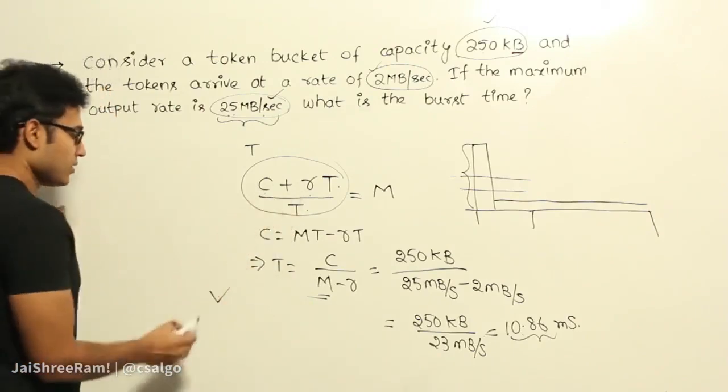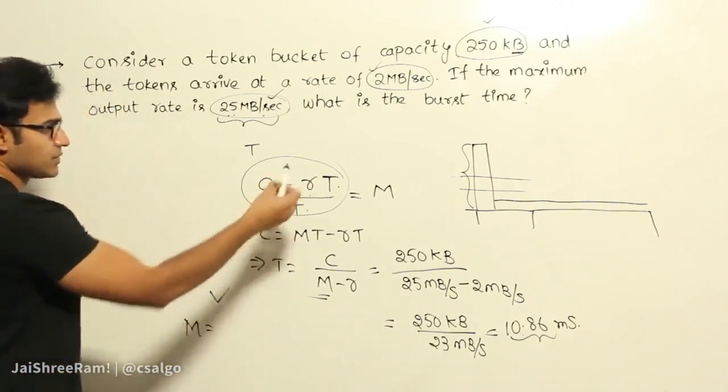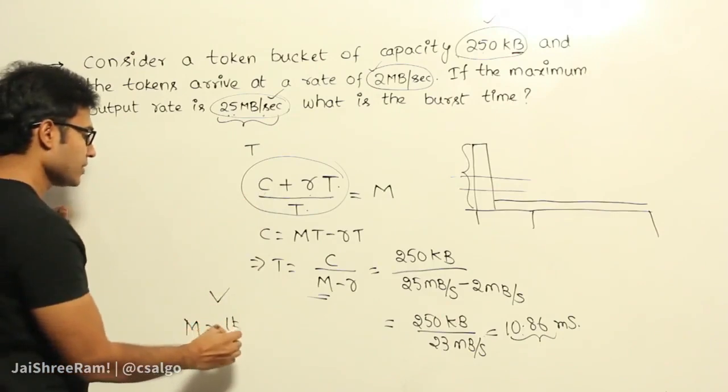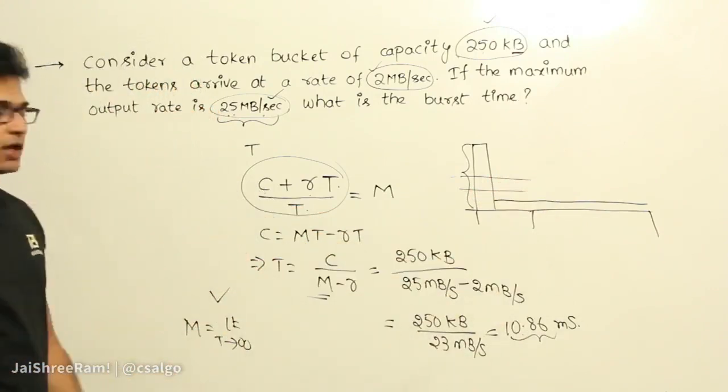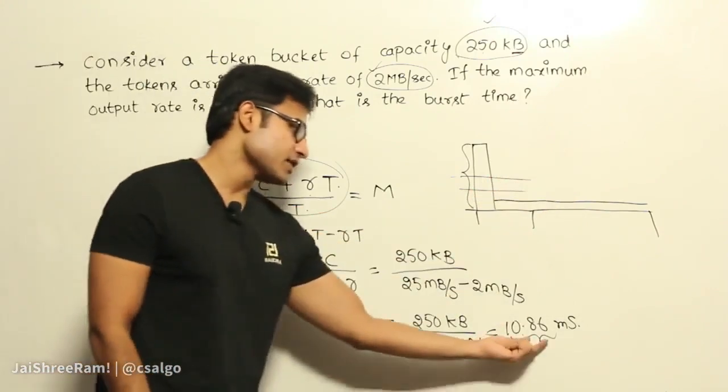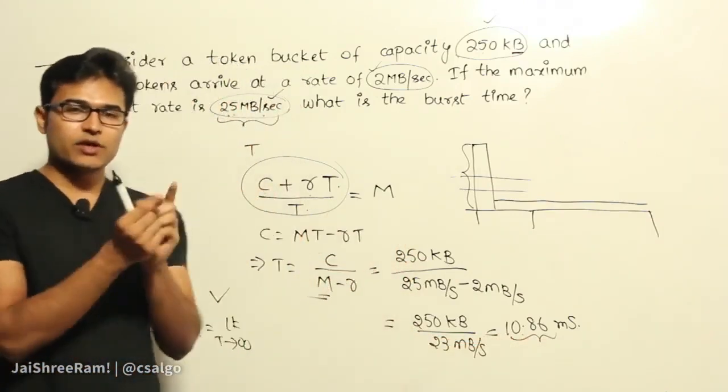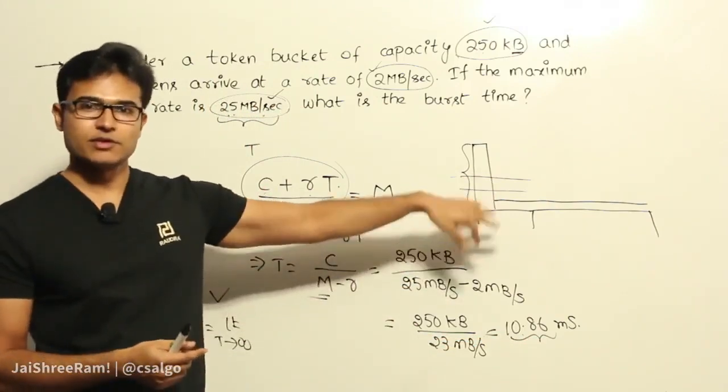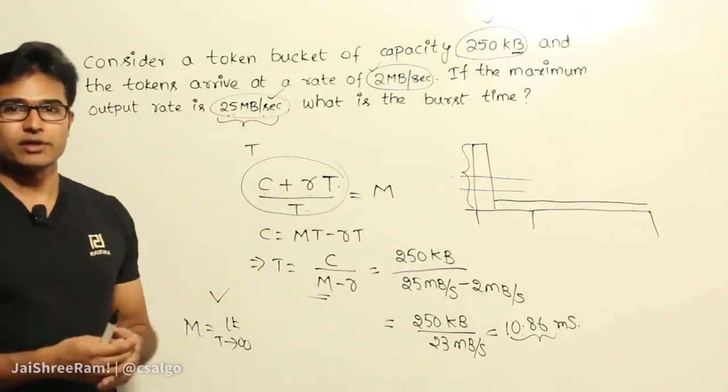Now let's try to divide this. The maximum rate is equal to, let's see what happens if I increase the time to infinity. If I want to find out what is the maximum rate we can maintain over a long period of time, not just for 10.86 milliseconds. 10.86 milliseconds is a very little time. Only over that time, if you average out whatever packets are being sent or bytes are being sent, you got 25 milliseconds as the output rate.